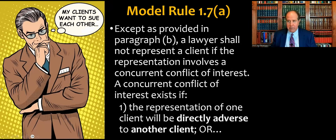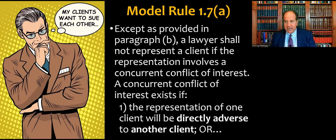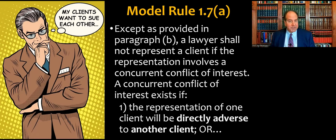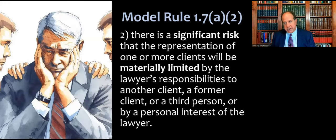Model Rule 1.7 Section A starts with: except as provided in paragraph B, a lawyer shall not represent a client if the representation involves a concurrent conflict of interest. That means you either have to decline the representation or withdraw from representation that's already underway. A concurrent conflict of interest exists if: one, the representation of one client will be directly adverse to another client — meaning they are on opposite sides of litigation or a transaction like buyer and seller — or two, there's a significant risk that the representation of one or more clients will be materially limited by the lawyer's responsibilities to another client, a former client, a third party, or by a personal interest of the lawyer.